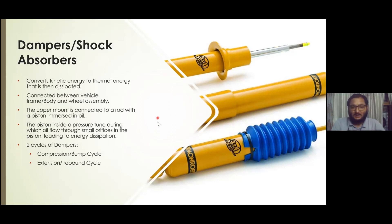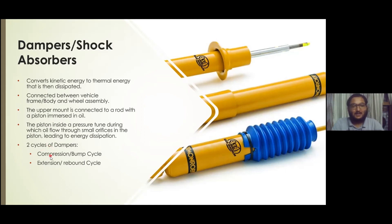There are small orifices in the piston. When the piston moves downward, the oil inside the damper moves upward through these orifices, resulting in the transfer of kinetic energy to thermal energy due to the oil's viscous properties — this is how the shock is absorbed. The two cycles of the damper are compression, when the piston moves downward (as when the vehicle goes over a speed bump), and extension, when the piston moves upward (as when the vehicle goes through a pothole).